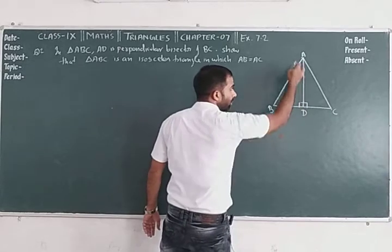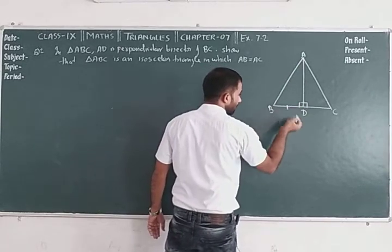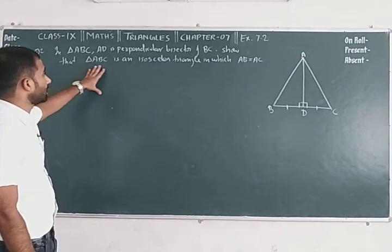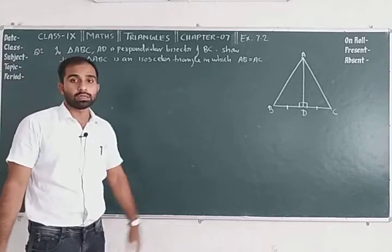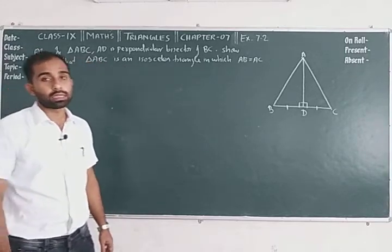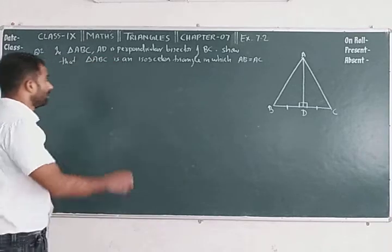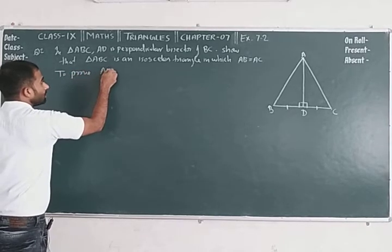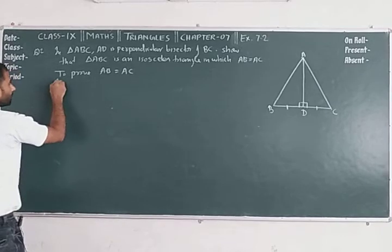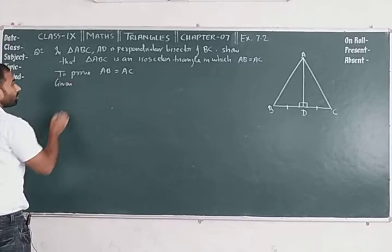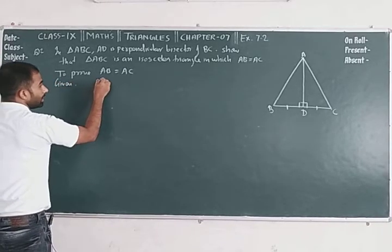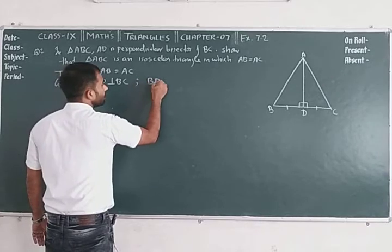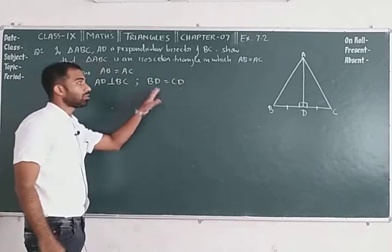AD is perpendicular to BC, and AD bisects BC so that BD is equal to CD. Show that triangle ABC is an isosceles triangle. To prove a triangle is isosceles, you need to show two sides are equal.